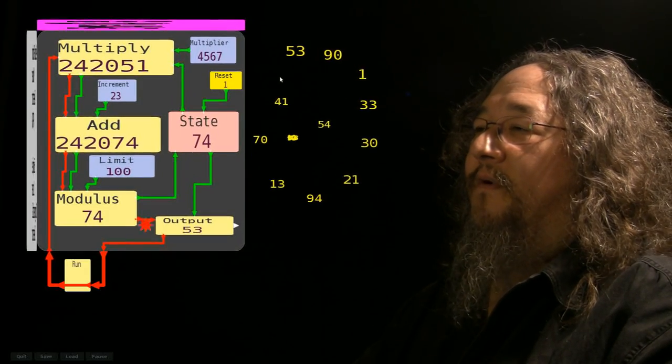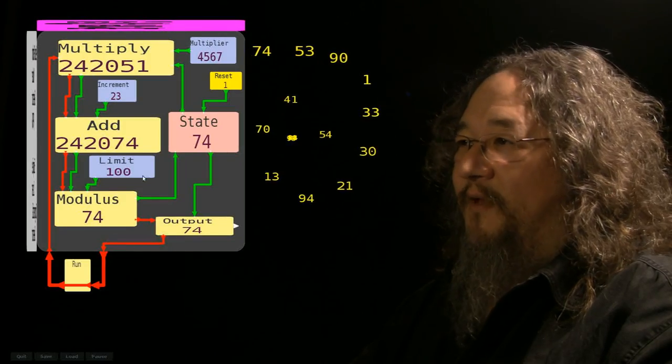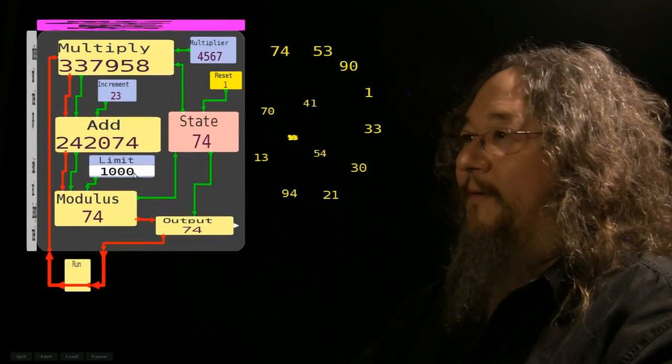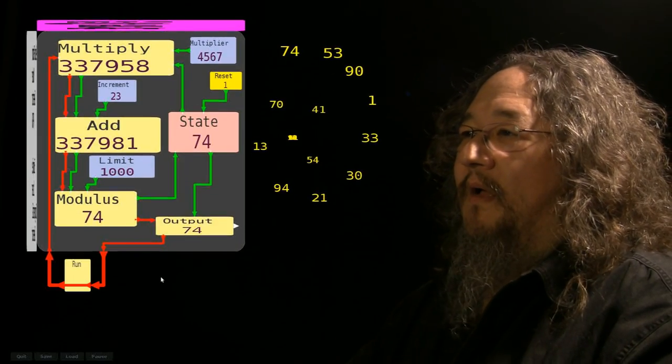Which shows, by the way, that the only thing that this thing has got going for it is that state. Once we reset it, it's called re-seeding, putting a seed, because the beginning number that starts this whole process is called the seed. Setting the seed back to a known quantity is called re-seeding. Now we're getting the same thing. 90, 53, and so on.